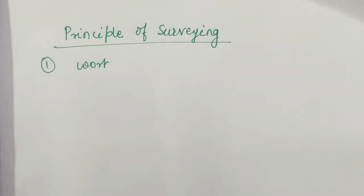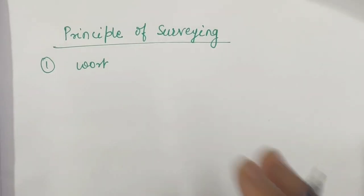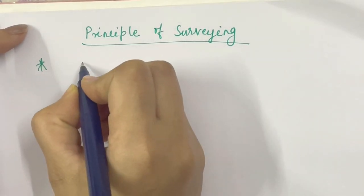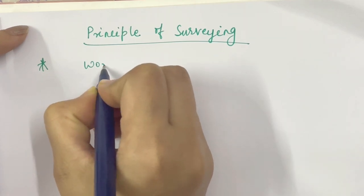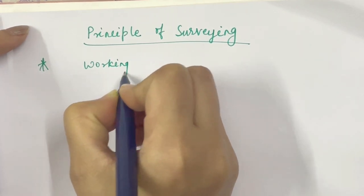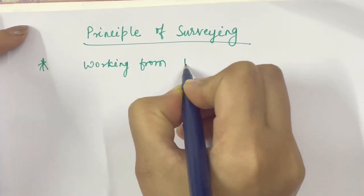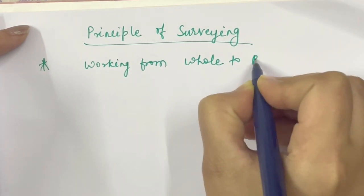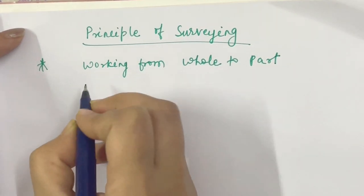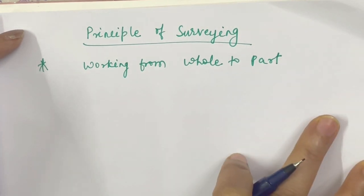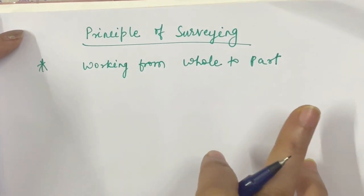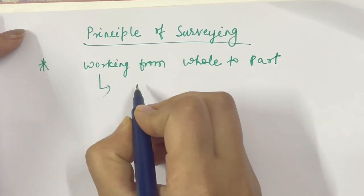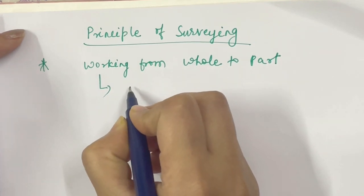Next topic: principles of surveying. The basic principle of surveying is working from whole to part. The reason behind this is to prevent errors — it reduces the accumulation of error.